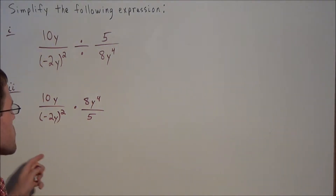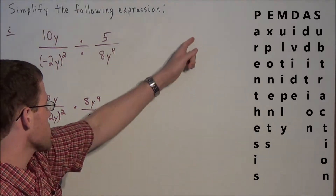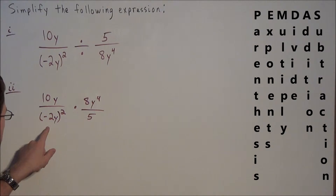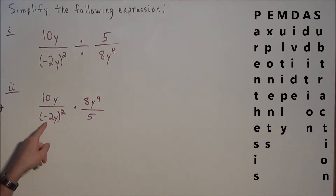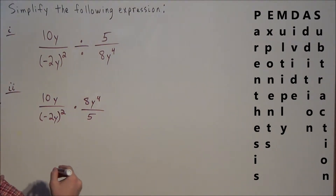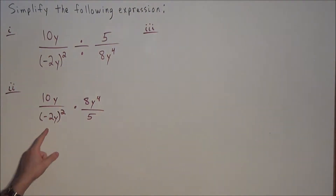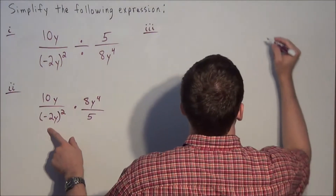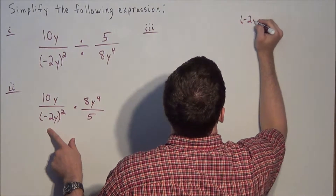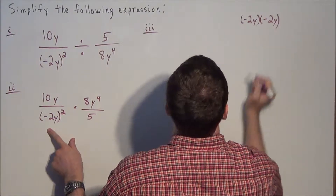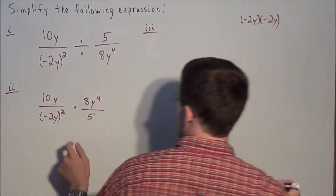Now using order of operations, for the next line we simplify the negative 2y squared in the denominator. Recall that when we square anything we're multiplying it by itself, so we're going to be multiplying negative 2y times negative 2y to simplify this piece.